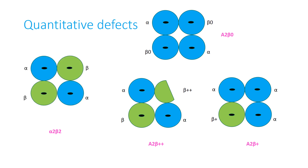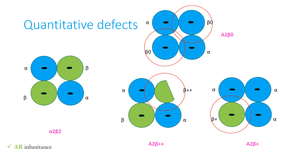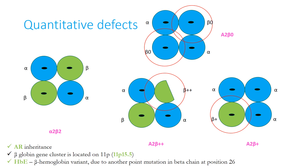While normal hemoglobin is alpha2 beta2, there can be no production of beta chains, i.e. beta0, when alpha chains accumulate inside the RBC and produce symptoms, or beta+ or beta++ when a partial number of beta chains are produced. It has autosomal recessive inheritance. The beta globin gene cluster is located on the short arm of chromosome 11 at the 11p15.5 locus. Hemoglobin E is a beta hemoglobin variant due to a point mutation in the beta chain at position 26 and presents as a milder form of beta thalassemia.